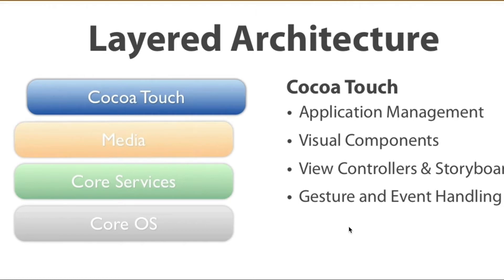Our first layer is the Cocoa Touch layer — it is the topmost layer. It is mainly used for general application management, for bootstrapping our application in the background, or working in a multitasking environment. All of our visual components are defined here, like buttons, switches, tab bar components, etc. View controllers and storyboards, which we use for managing the various screens and transitions between those screens, are also found here. Additionally, gesture and event handling — the advanced multi-touch gesture available in iOS — can be found in the Cocoa Touch layer.